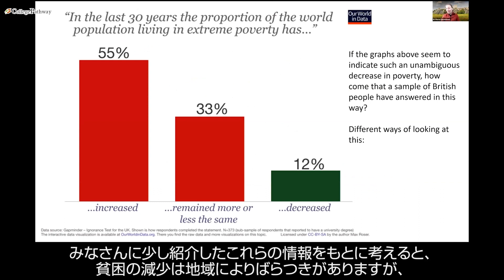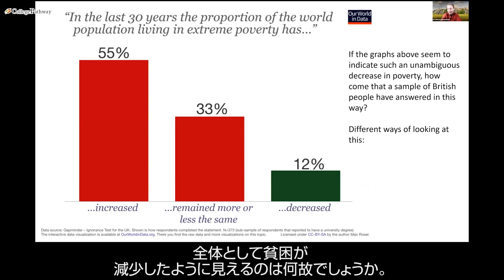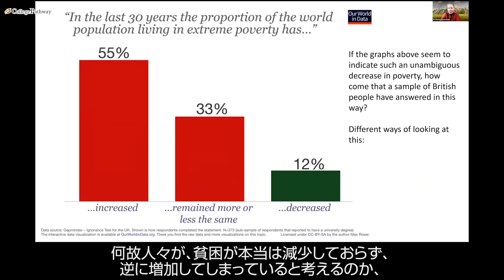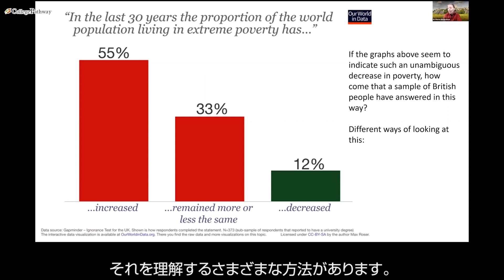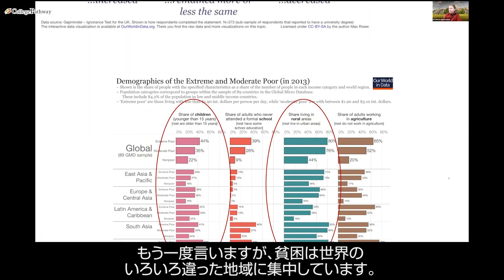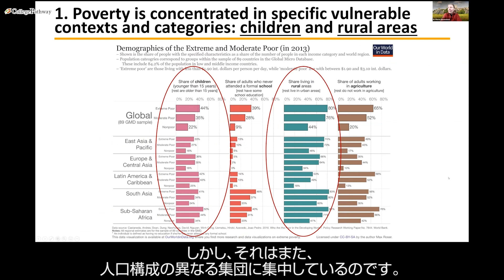Given that on the surface poverty has decreased in some areas more than others, why then does a survey of British people suggest they believe poverty has actually increased? There are different ways of understanding why people's perception is that poverty has not decreased but in fact increased. Poverty is concentrated in different pockets of this world, which helps explain why people think poverty is still pervasive.